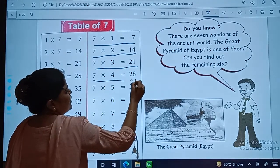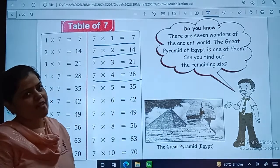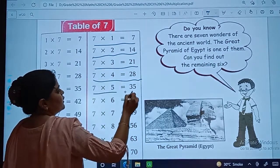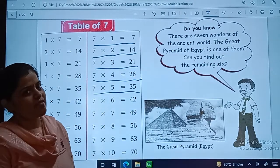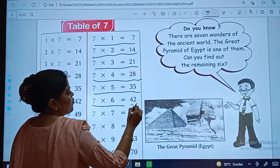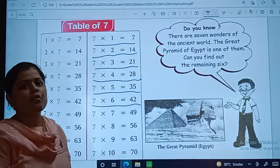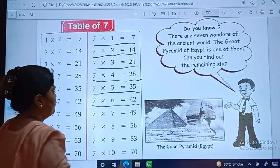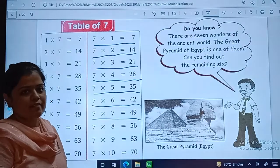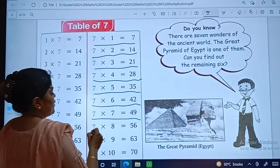7 fours are 28. 7 fives are 35. 7 sixes are 42. 7 sevens are 49.